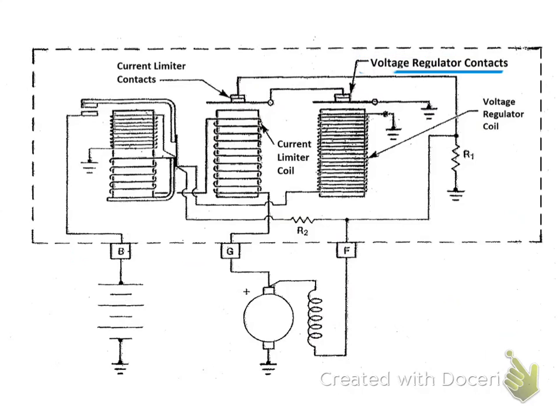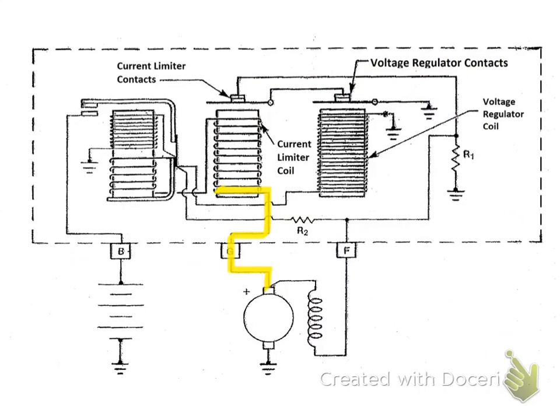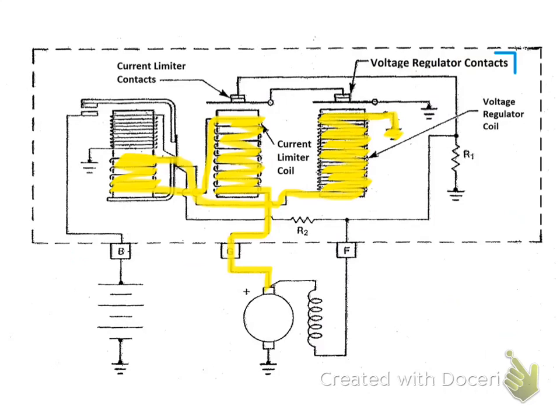Voltage regulator points. Again, we have the field current finding ground through the points. Our current is going to go through the RCCR. It'll also go back through the voltage regulator coil. If the voltage gets too high, it will create a magnetic field. Of course, those points are spring-loaded closed. Once that magnetic field is created, it will pull the points open.